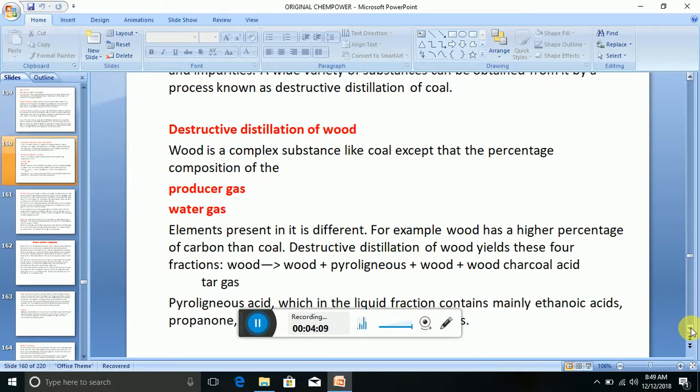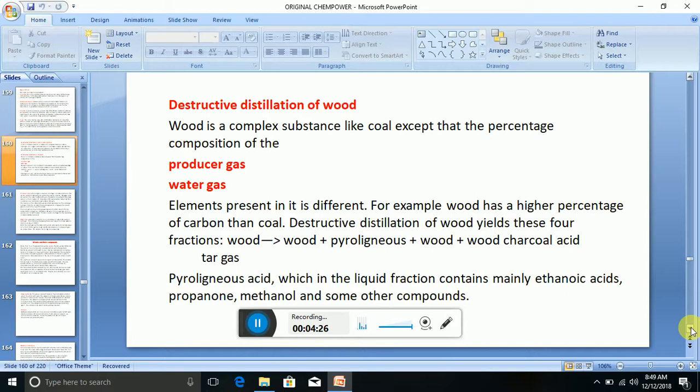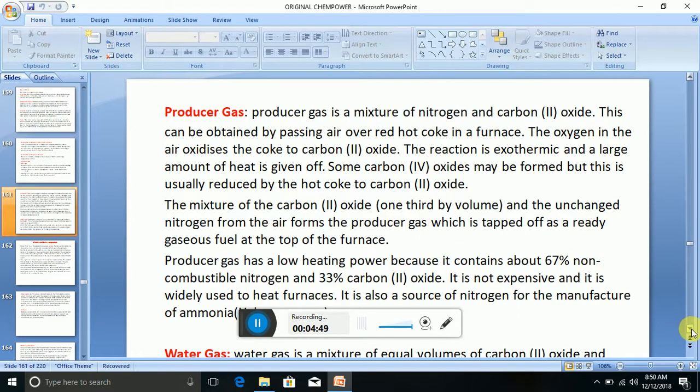Destructive distillation of wood yields these four fractions: we have the wood, pyrogenous wood charcoal acid, tar gas, which is the liquid fraction. So we have the pyrogenous acid, we have the tar gas, which is the liquid fraction, mainly ethanoic acid, propane, methanol, and other compounds.